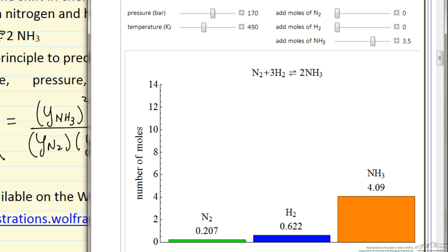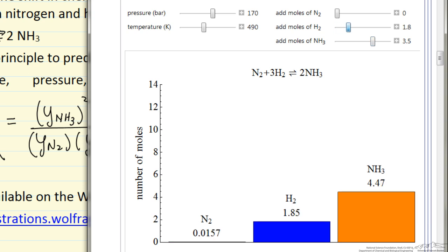Suppose we add hydrogen to the system. We expect the reaction to shift to the right, again from Le Chatelier's principle. If I add hydrogen, notice that the amount of ammonia increases, but now I've reacted not all the nitrogen, just it's too small to see on this scale.